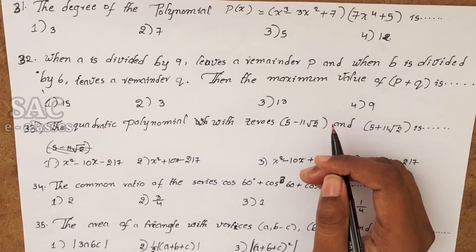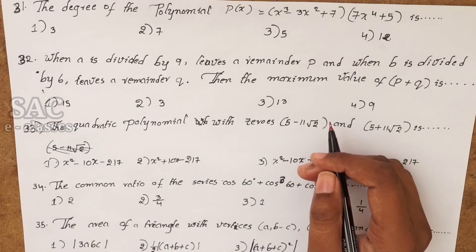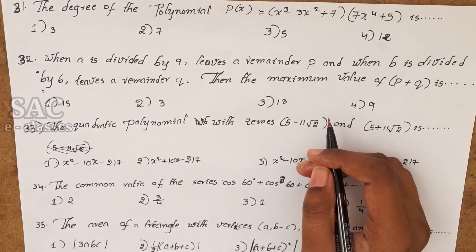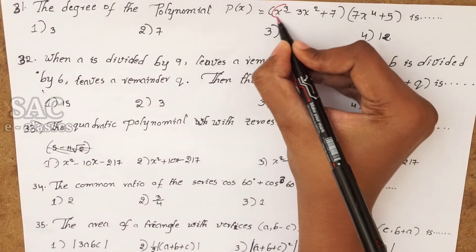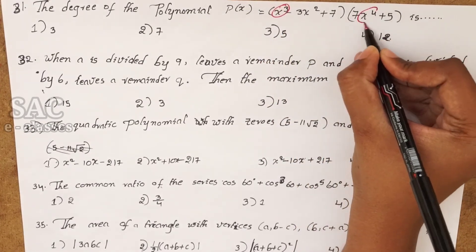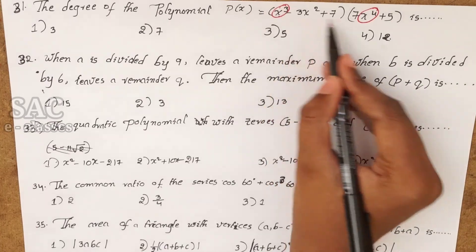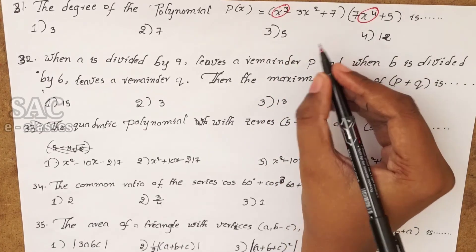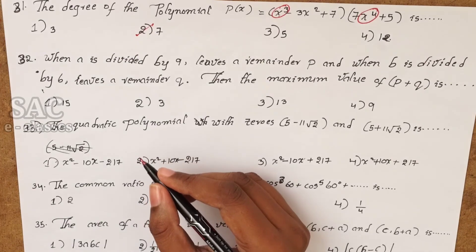Problem 31: the degree of the polynomial p(x) = (x³ − 3x² + 7)(7x⁴ + 5). Multiply the highest degree terms: x³ × x⁴ = x⁷. So the degree is 7.